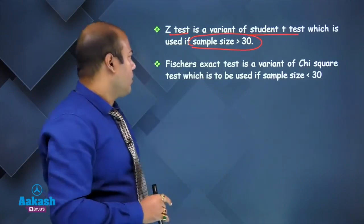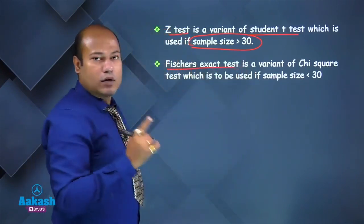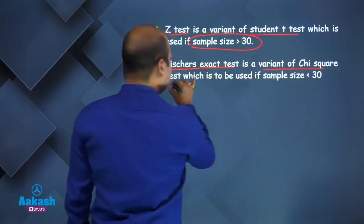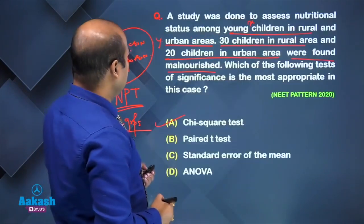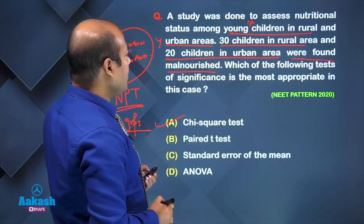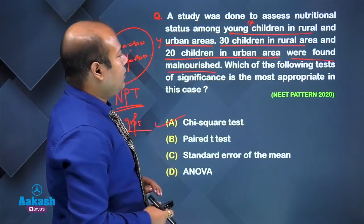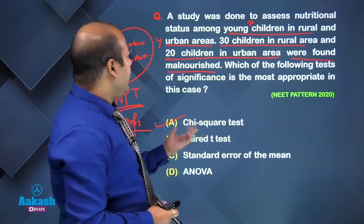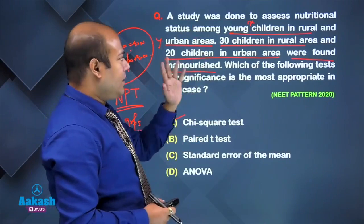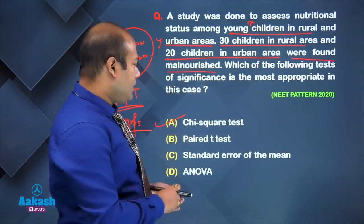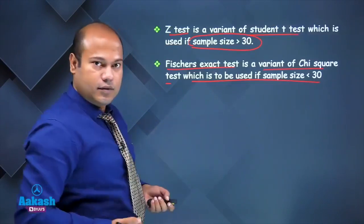Another exception is Fisher's exact test — a non-parametric test and a variant of the chi-square test — which is used if the sample size is less than 30. In the rural/urban example, the sample size is not less than 30 and Fisher's exact test was not in the options, so chi-square test was used.